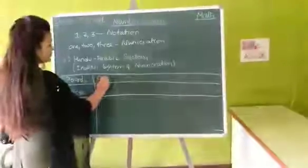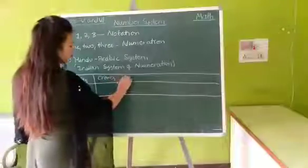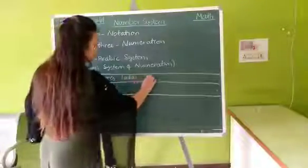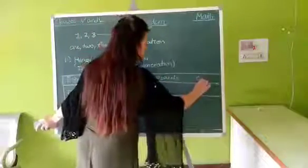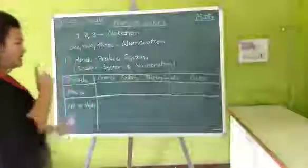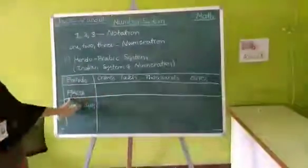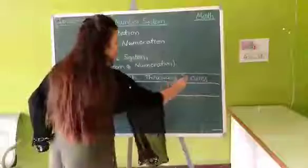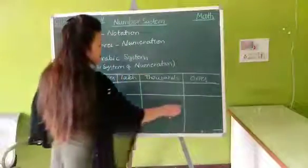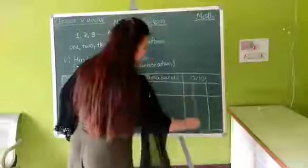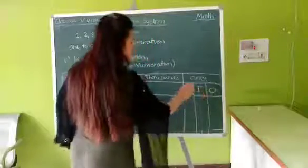Periods are crores, lakhs, thousands and ones. And each period have their own places. Each period has their own places. Ones have three places. Ones, tens, hundred.